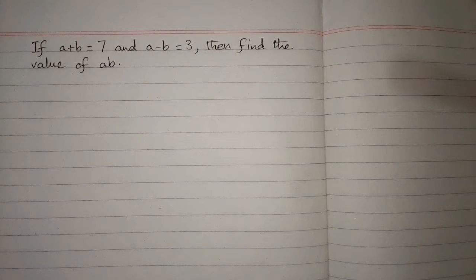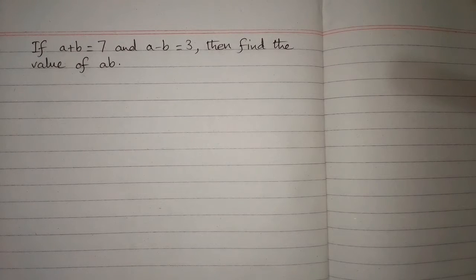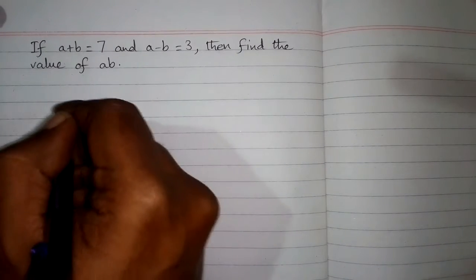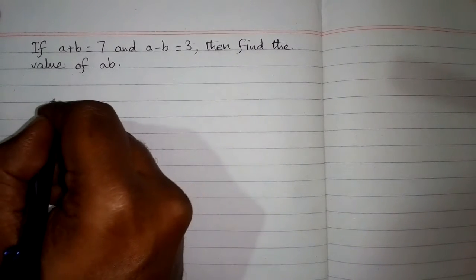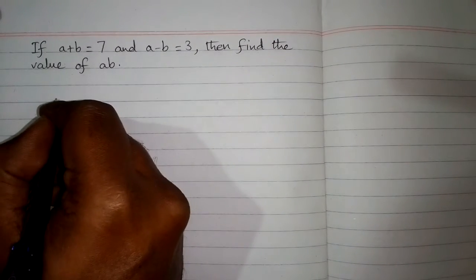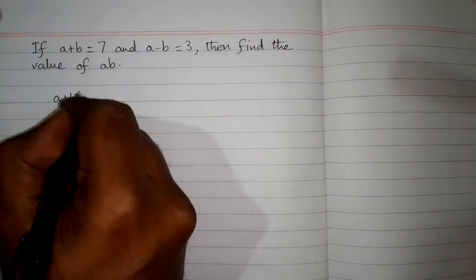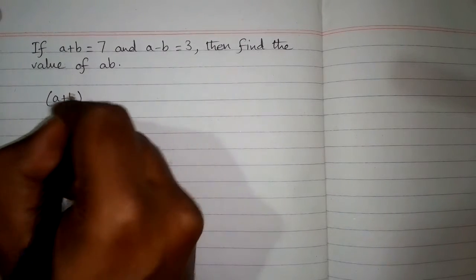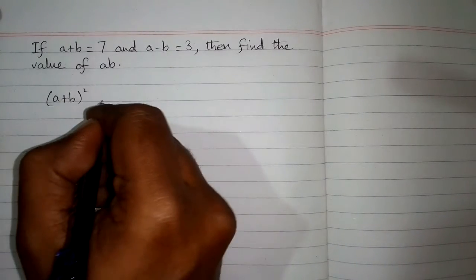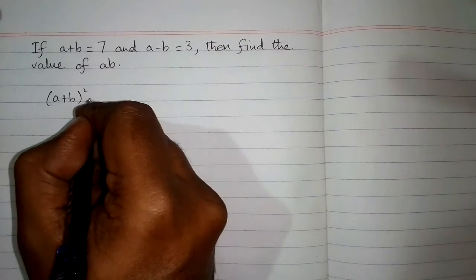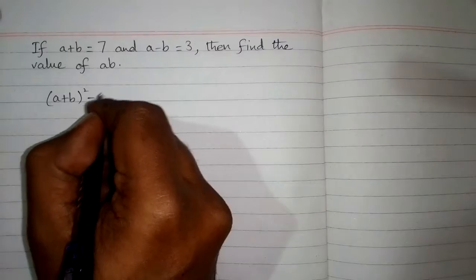If a plus b is equal to 7 and a minus b is equal to 3, then find the value of ab. In order to solve this problem, we will use algebraic identities: a plus b whole square and a minus b whole square, and we will subtract these identities.